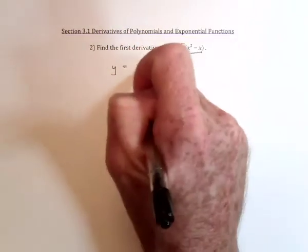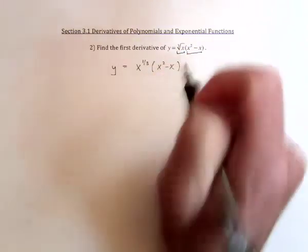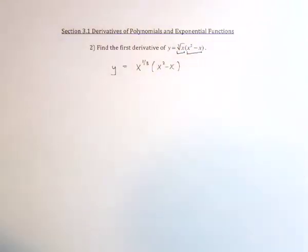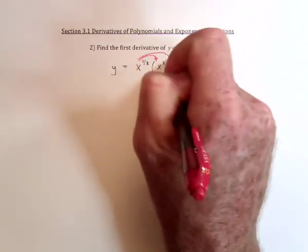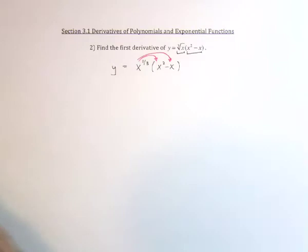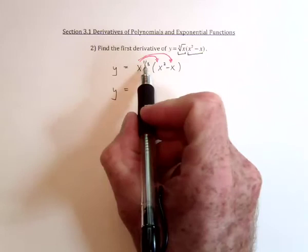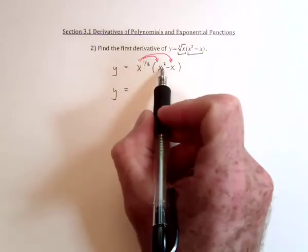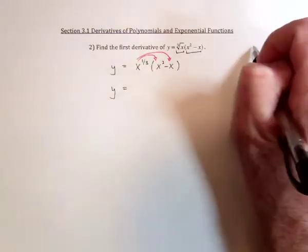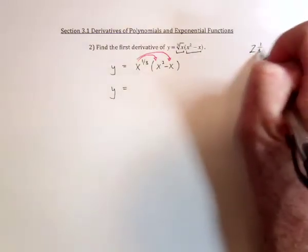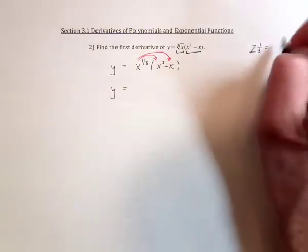Namely, rewrite this as x to the one-third, and then distribute. So multiply this through, and we would have x to the one-third times x squared — you add the exponents — so it's going to be two and a third. Two plus a third is equal to seven-thirds.